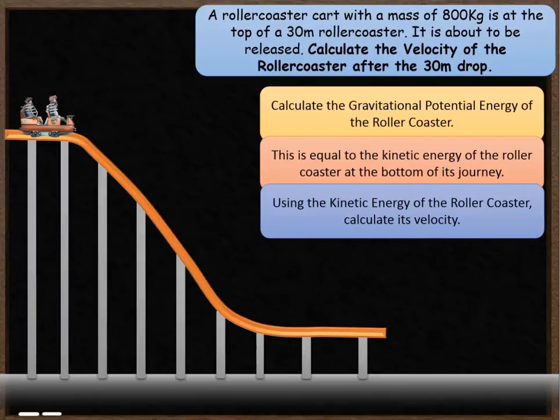Here's a question for you to have a go at, very similar to the previous one. You have a roller coaster car with a mass of 800 kilograms at the top of a 30 meter roller coaster — it's about to be released. You need to calculate the velocity of the roller coaster after the 30 meter drop. The same three steps: calculate gravitational potential energy, set that equal to kinetic energy, then find the velocity. Pause the video and give it a go.